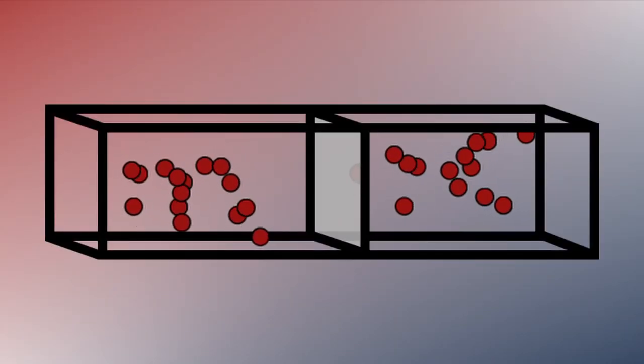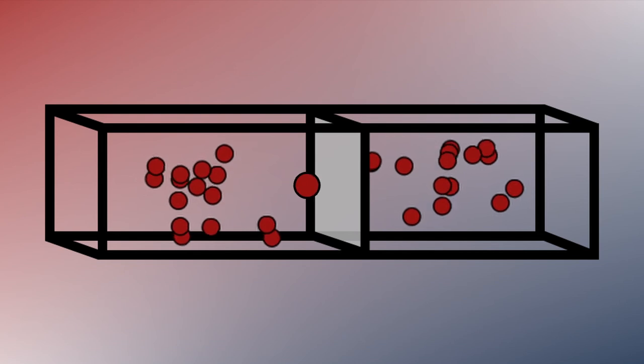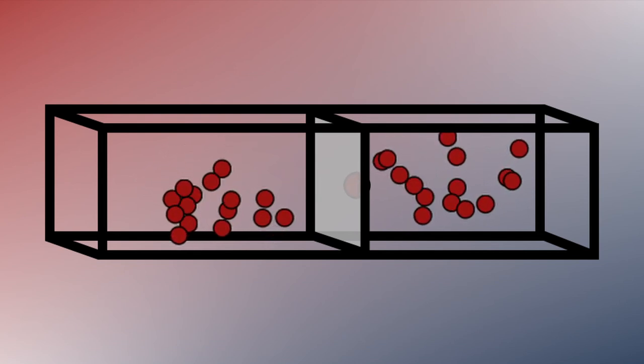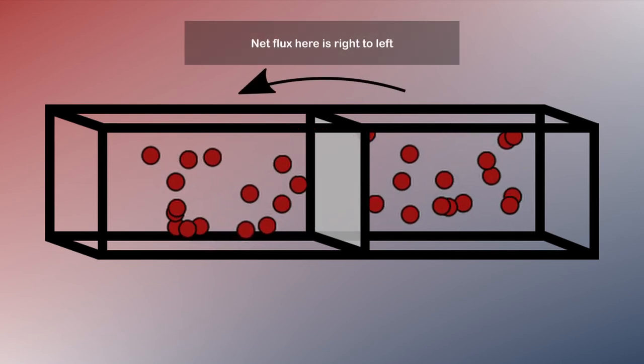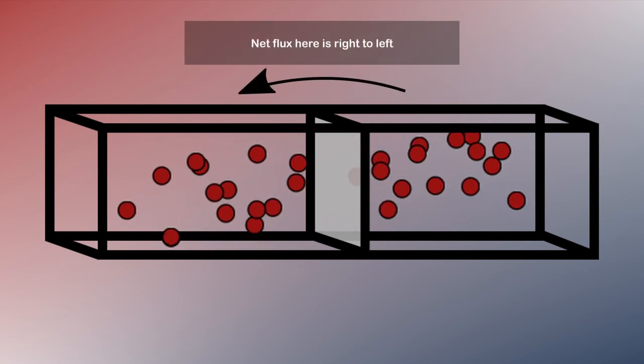Consider observing the square for one second. If there is one molecule passing through the square from left to right, but three molecules passing through it from right to left, then the net flux is two molecules per second per area of the square.